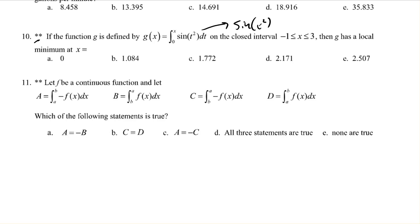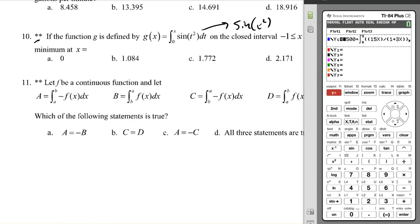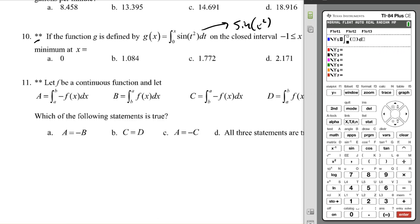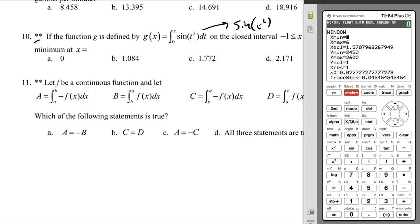We could do that, but if it's just find the minimum and it's multiple choice and I have a calculator, let's just graph it. Show me what g looks like. If g is the integral from 0 to x of sine—better be in radian mode—x squared dx. Looking at those answers, it looks like the x value will be somewhere between 0 and 3, so I'm going to limit my x values.